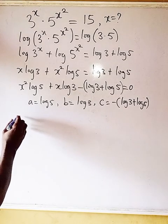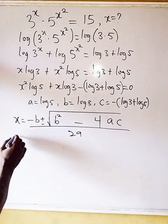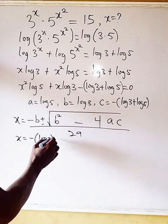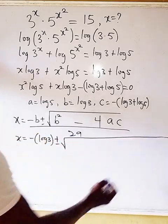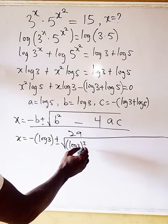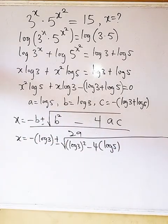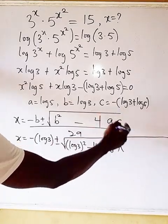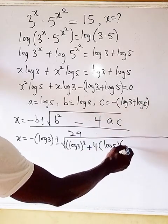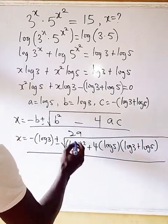Using the quadratic formula x = (−b ± √(b² − 4ac)) / 2a, we substitute: x equals minus log 3, plus or minus the square root of (log 3)² minus 4·log 5·(−(log 3 + log 5)), all over 2·log 5.